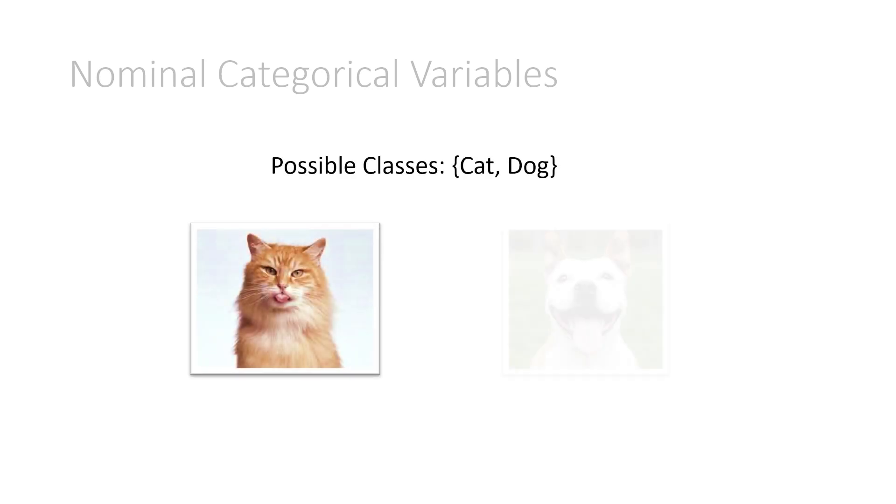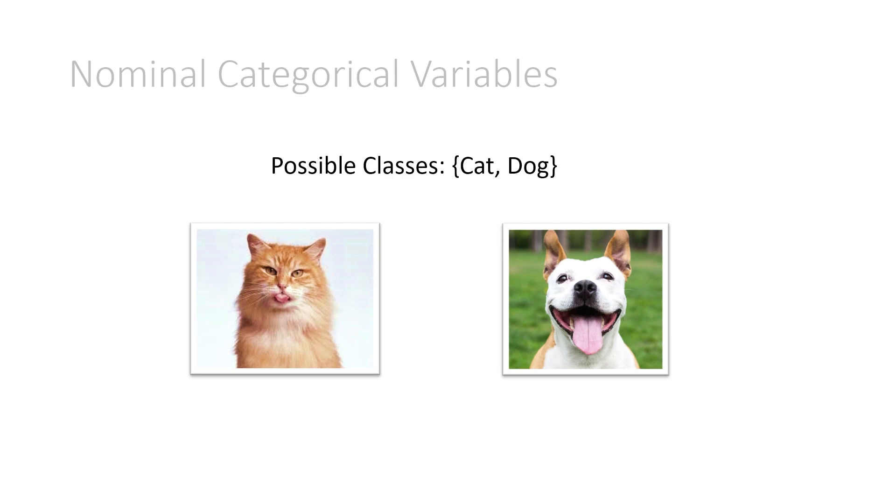Well, let's look at nominal categorical variables first, which means no order. A possible example of this is the cat and dog example. There is no order between cats or dogs. They're just simply two very different animals. So again, nominal. There is no order to these classes.